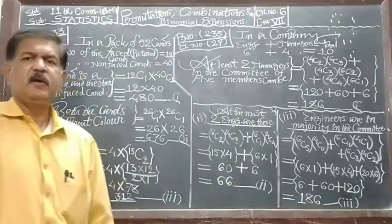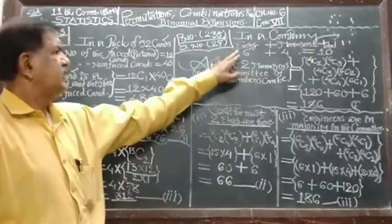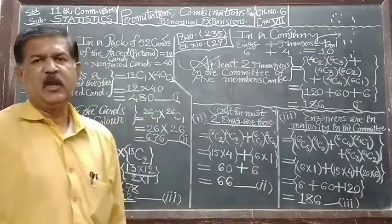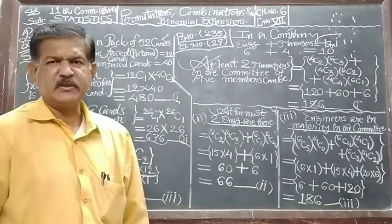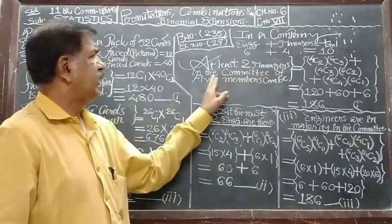One more example. In a company there are 6 number of engineers and 4 managers. 6 engineers and 4 managers means total number of persons is 10, and we have to form a committee of 5 members in such a way that at least 2 managers are there in a committee.